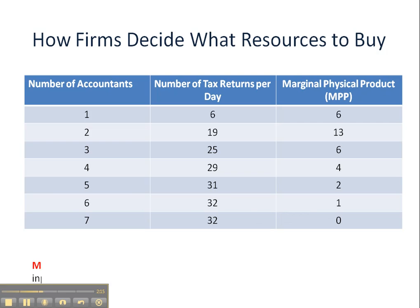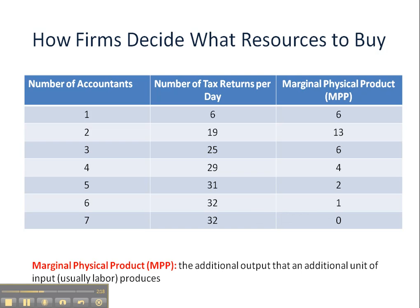When we're figuring out MPP — Marginal Physical Product, being the additional output that additional units of input, usually labor, produce — we see that diminishing returns sets in at the third worker. The reason for that is that you have variable units of input, in this case accountants, using fixed units of input, which would be the capital in our accounting firm: computers, desks, chairs, and so forth. After a certain point, their productivity falls, which happens here with the hiring of the third worker.